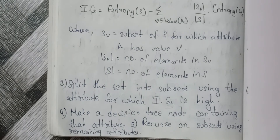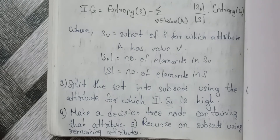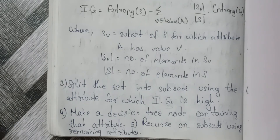Make a decision tree node containing that attribute. Then recurse using the remaining attributes — the other attributes — to recursively build the tree. If you choose an example, you will be able to work through it. I will try my level best to finish it quickly.